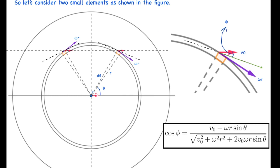We consider two elements — one in the first quadrant and one in the second quadrant — each at an angle theta from the x-axis. These small elements have velocity v-naught in the x-direction and omega-r in the tangential direction. Looking at this in an enlarged view, we have v-naught in the horizontal direction and omega-r tangentially, so the net velocity of the particle is given by the green arrow. The friction force acts in the direction opposite to the net velocity.